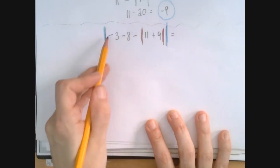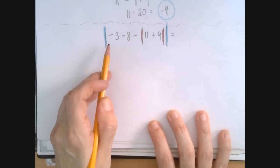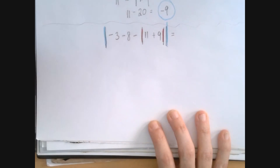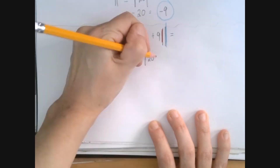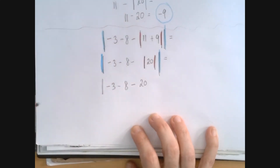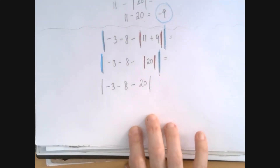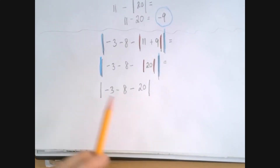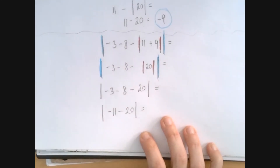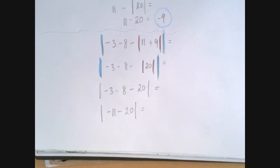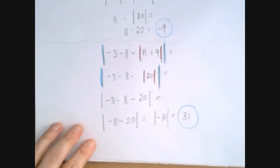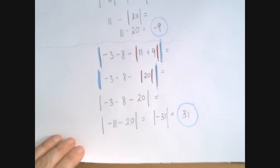Absolute values function as parentheses, so we first work out the innermost one. 11 plus 9 is 20, and the absolute value of 20 is 20, but we're still subtracting it. So now we're at negative 3 subtract 8 further subtract 20, and when we're done, take the absolute value. Negative 11 minus 20 is negative 31, and the absolute value of negative 31 is 31.